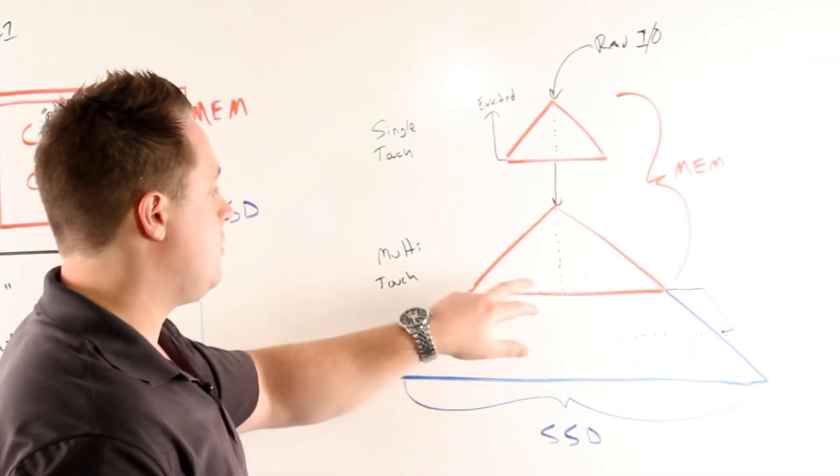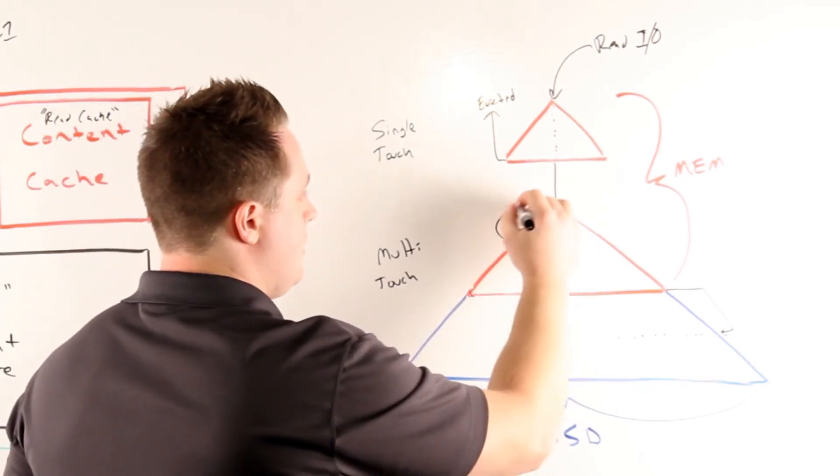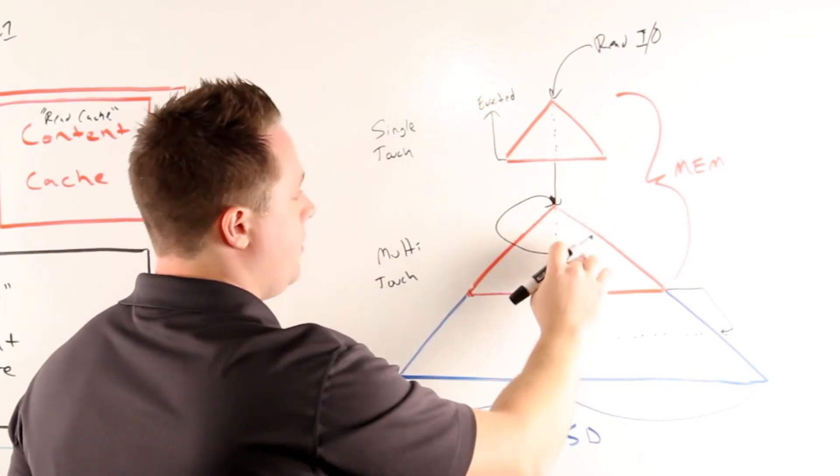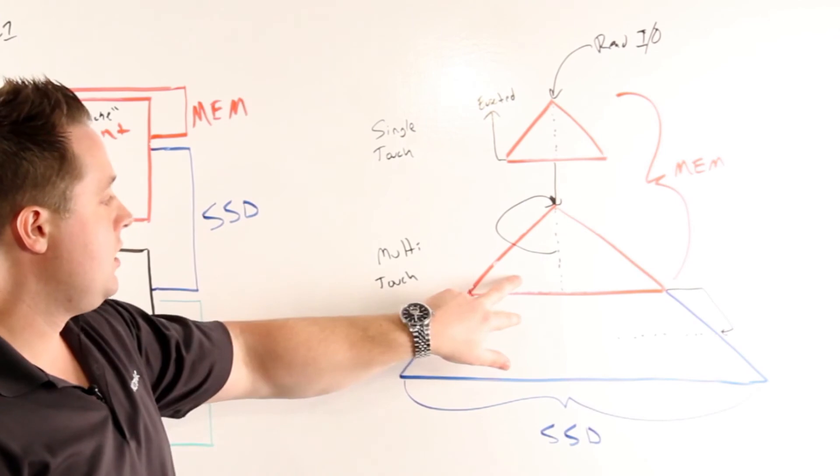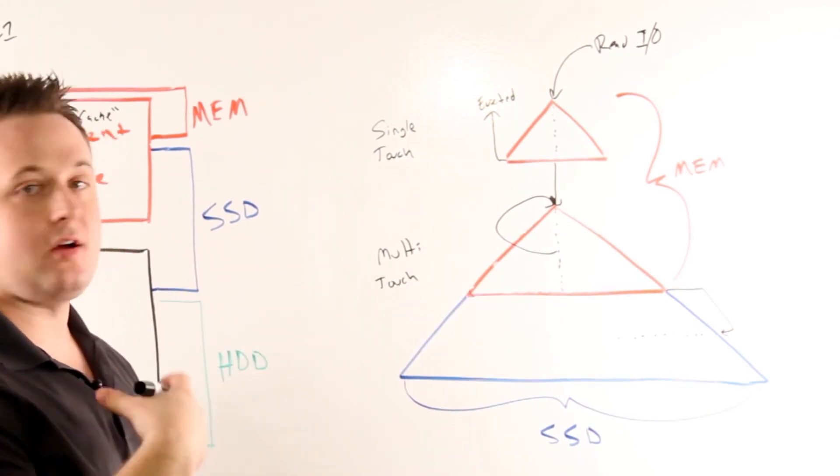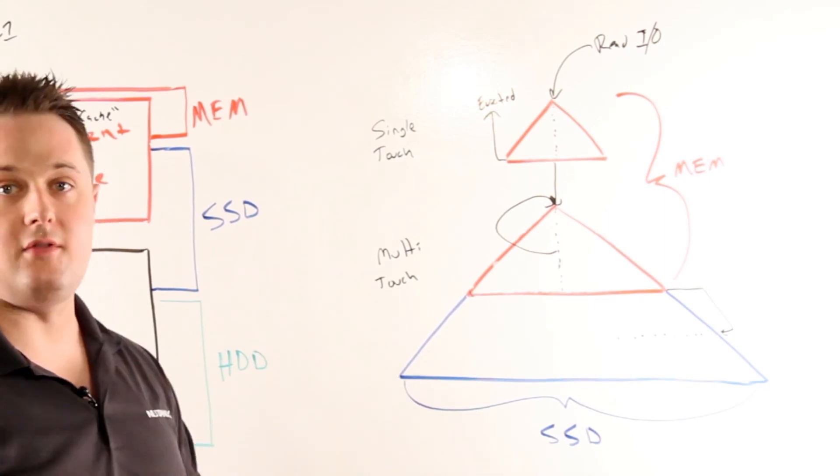One of the key things to highlight is on any additional request for that piece of data, that data is placed at the top of the multi-touch pool again. What that allows us to do is keep the most frequently accessed data within the cache. This gives us a much higher cache hit ratio and lets us return more read requests from the cache versus having to go down to disk.